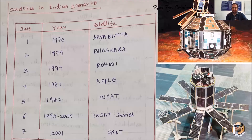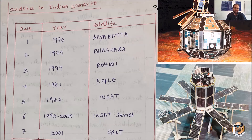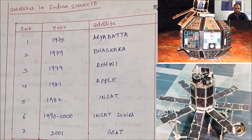Coming to the Indian scenario, India has achieved great milestones in satellite technology. In 1975, India launched the Aryabhata satellite. In 1979, Bhaskar was launched, and in the same year the Rohini satellite was also launched. In 1981, the APPLE satellite was launched, and in 1982 the INSAT satellite was launched.